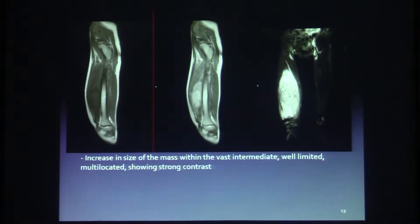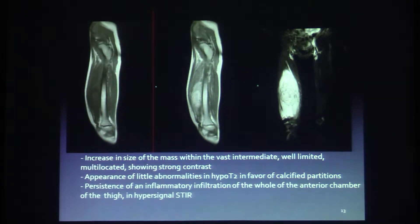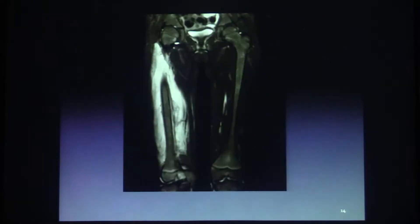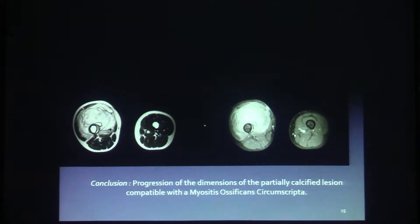The MRI showed an increase in size of the mass within the vastus intermedius, well-delineated, multi-loculated, showing strong contrast enhancement. Appearance of little abnormalities in hypo-T2 in favour of calcified partitions. Persistence of an inflammatory infiltration of the wall of the entire chamber of the thigh in hyper-signal STIR, and still no bone marrow signal abnormality. However, there is periosteal apposition.